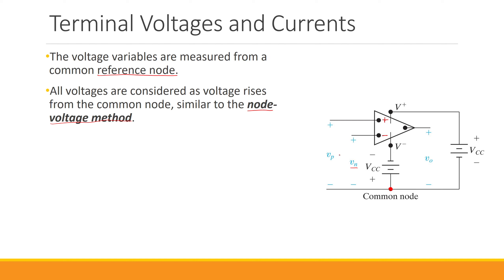The same is applied for the voltage at the non-inverting input: the negative sign is at the reference node and the positive sign is at the non-inverting input. We do the same for the output terminal as well — the negative side is connected to the reference node and the positive side is at the output terminal.